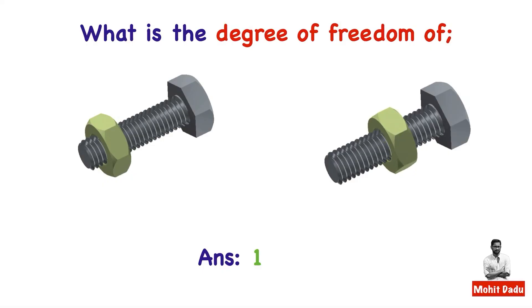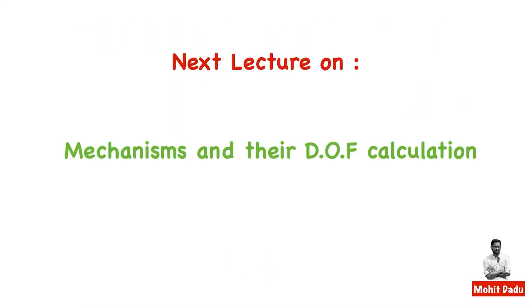The turning and sliding motions in a screw pair are not independent. When the nut rotates, it automatically advances based on the pitch of the thread — the two motions are interconnected. You cannot have one without the other, so the degree of freedom of the screw pair is only 1. Thank you.